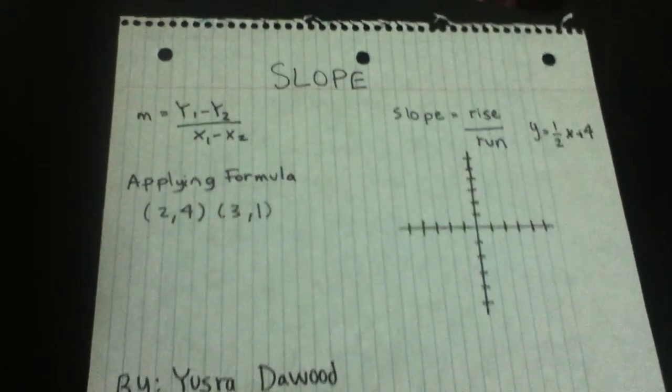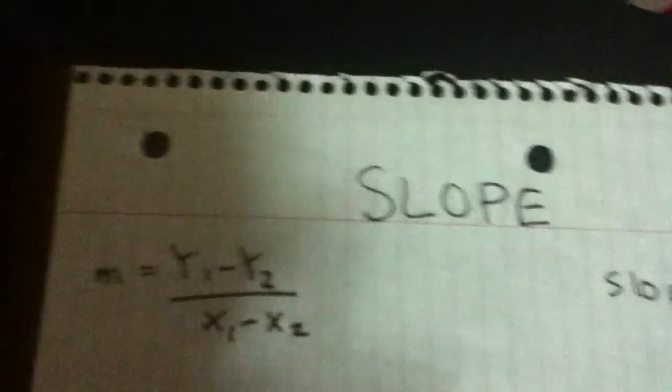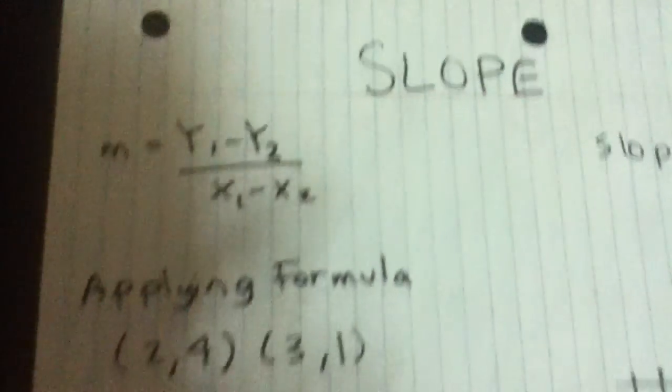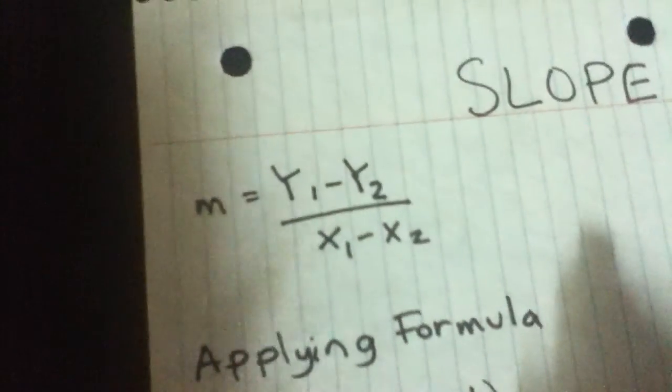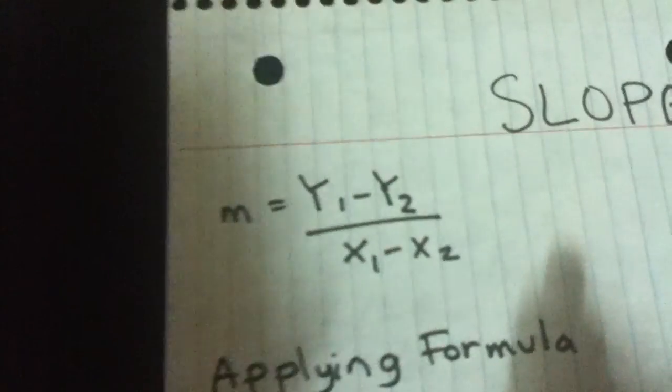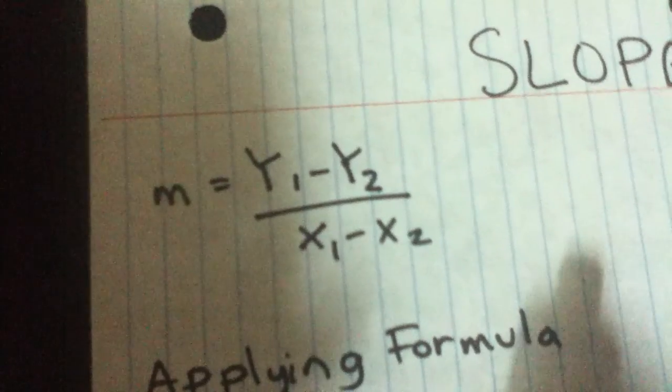Hi, so today you'll be learning about slope, and the formula for slope is m equals y1 minus y2 over x1 minus x2.